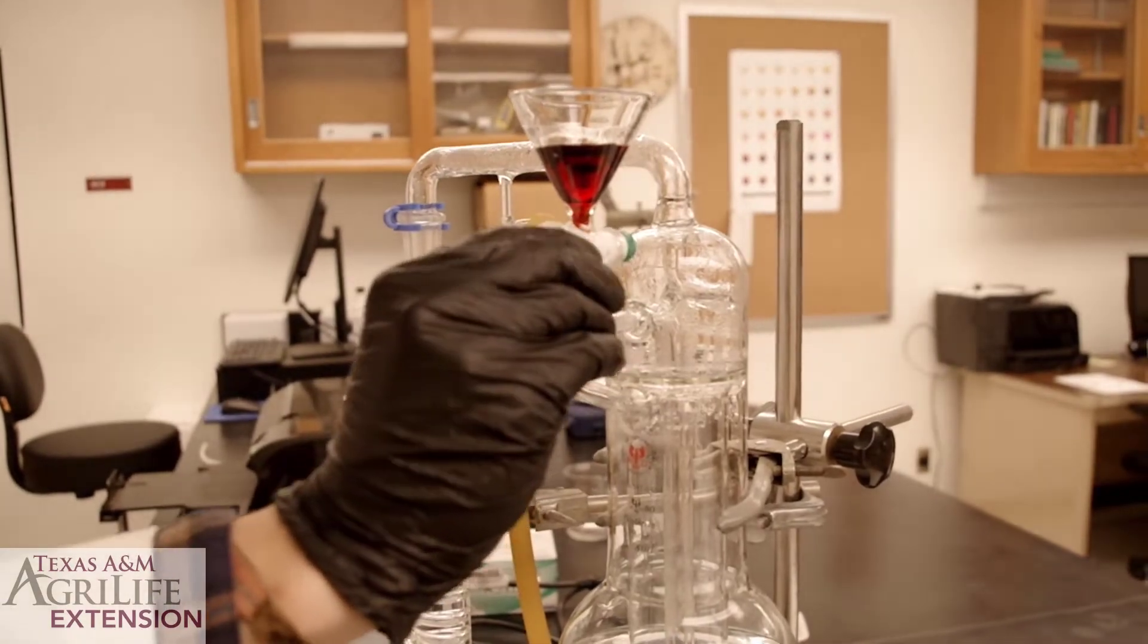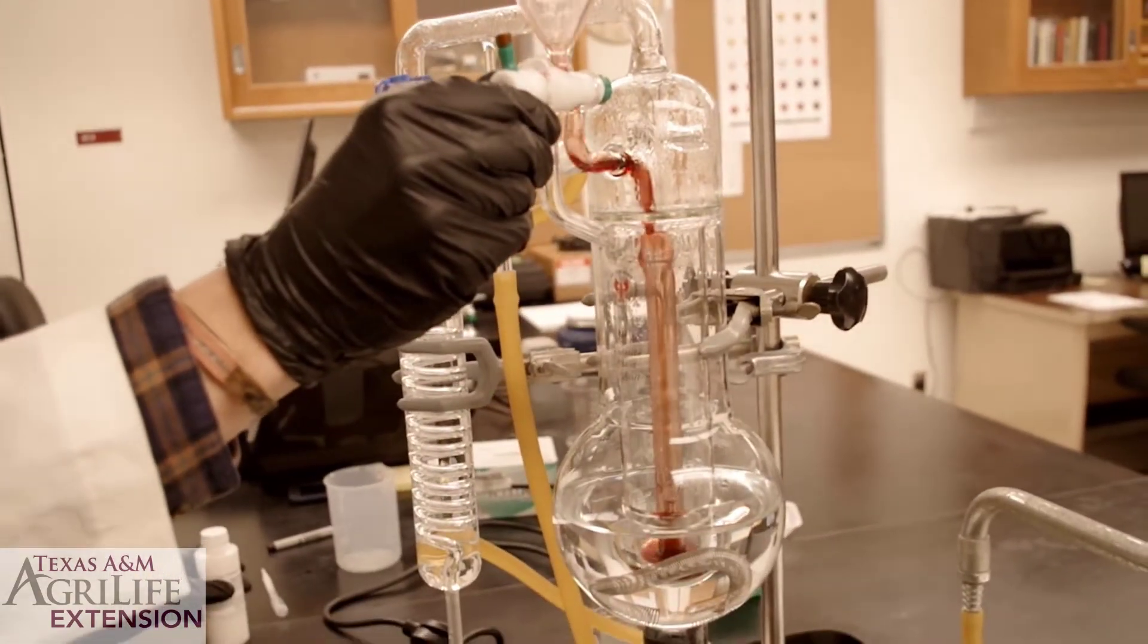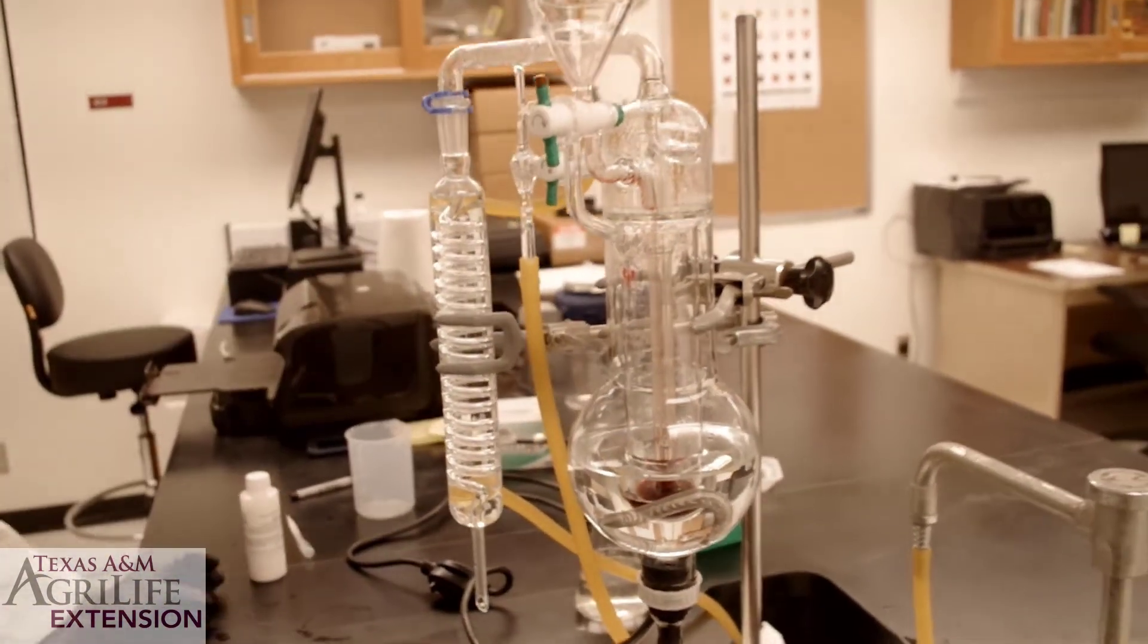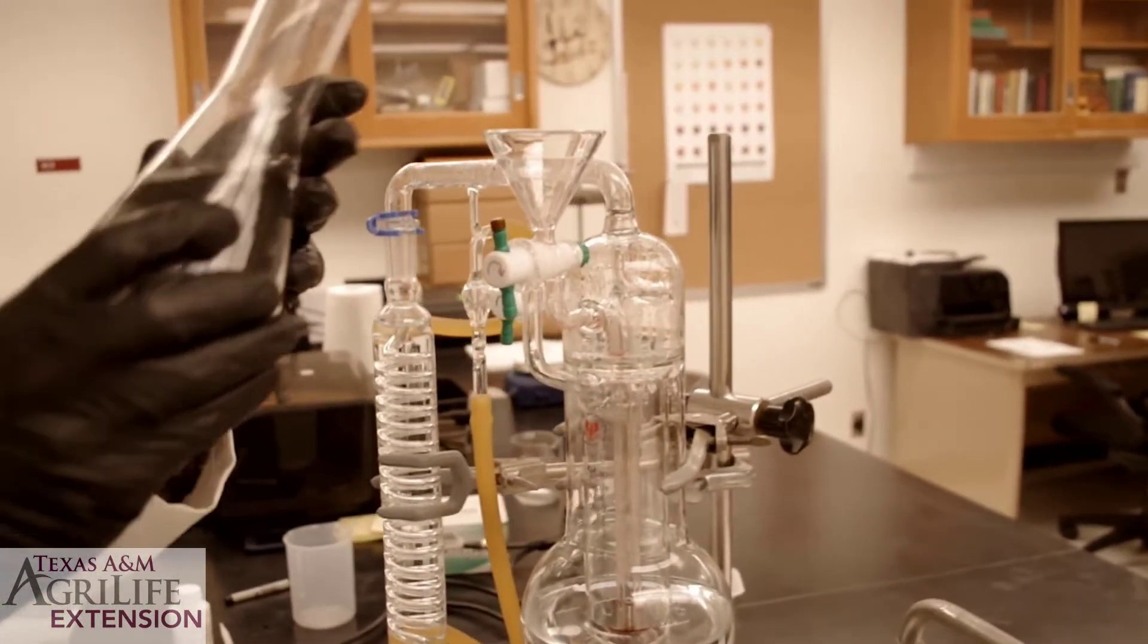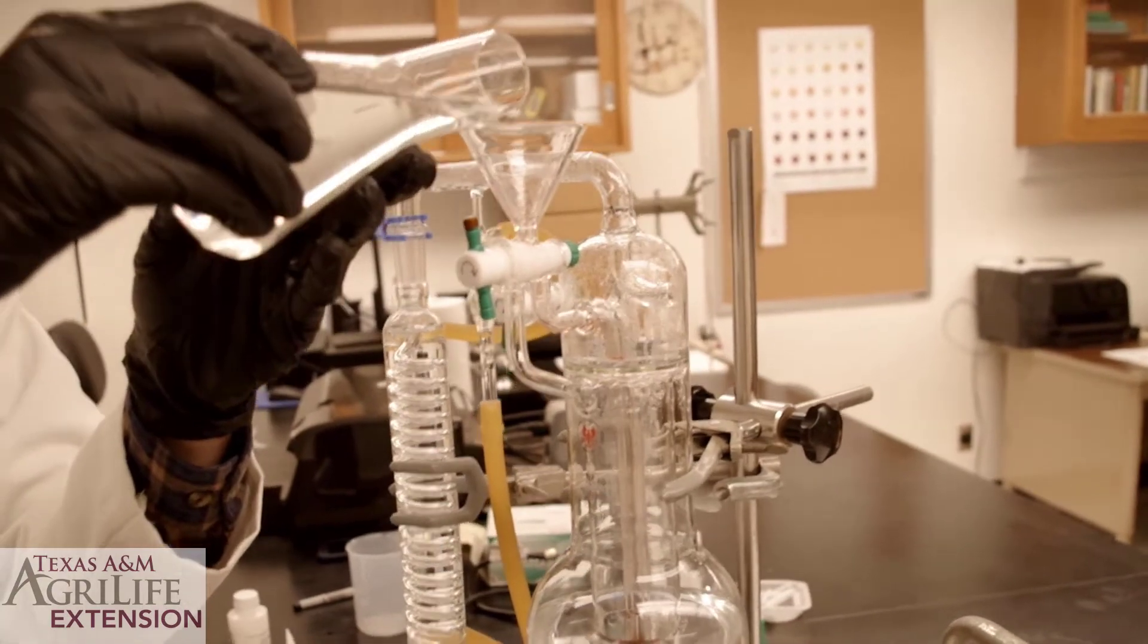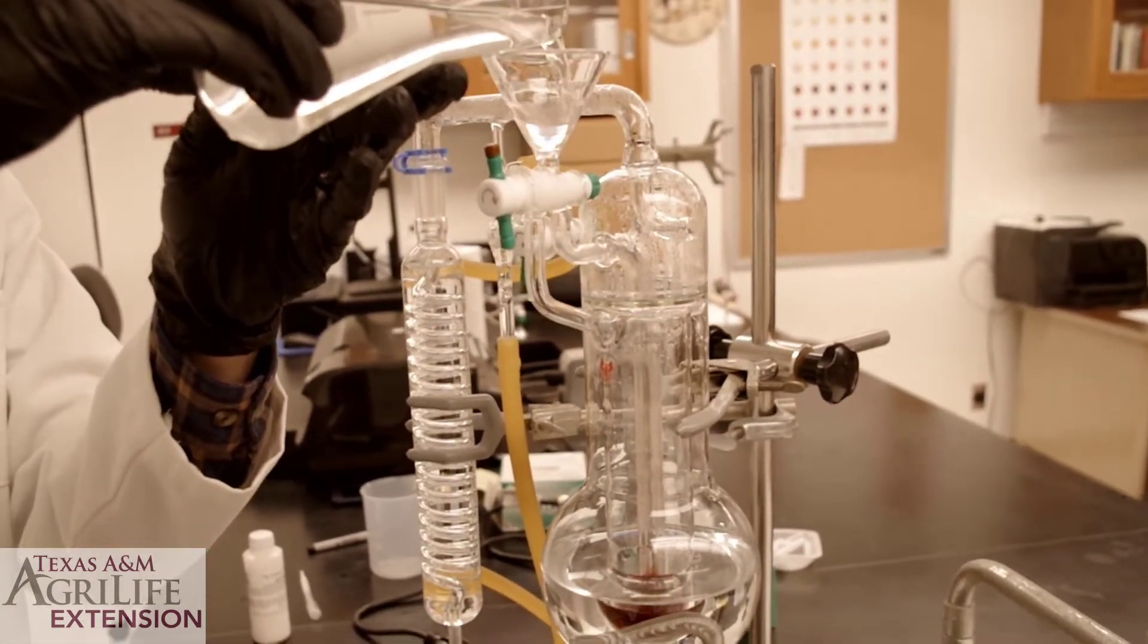Turn the stopcock clockwise to the vertical position with the red end up. Add about 100 milliliters of distilled water to the sample chamber.